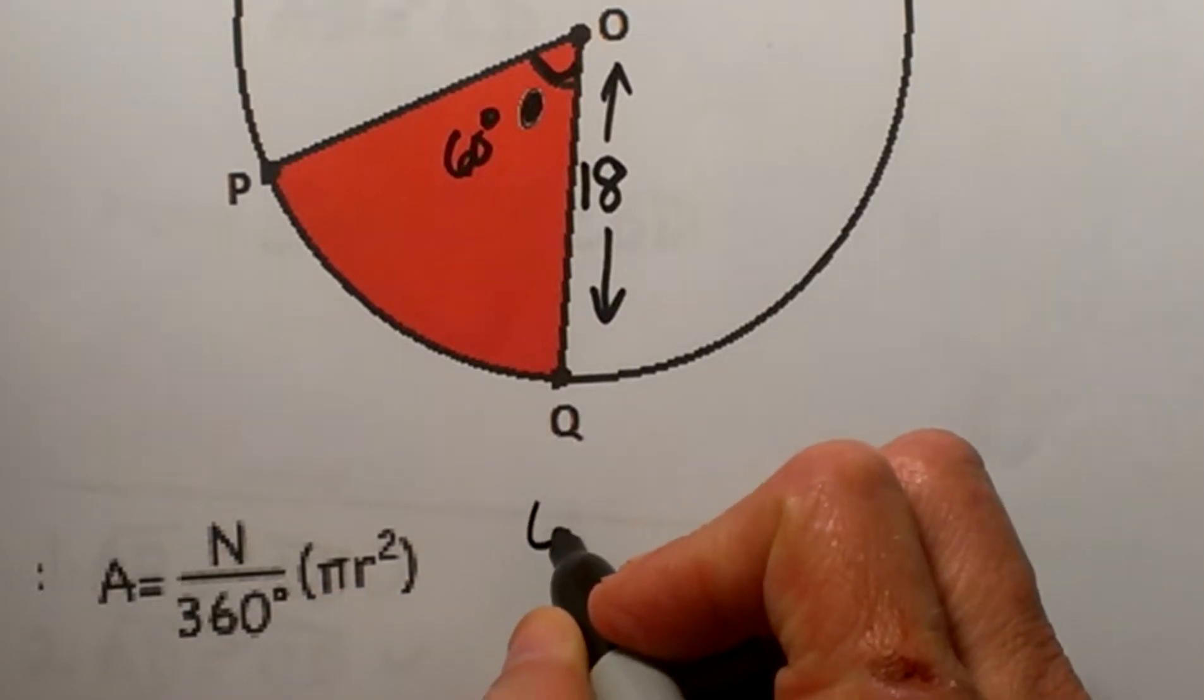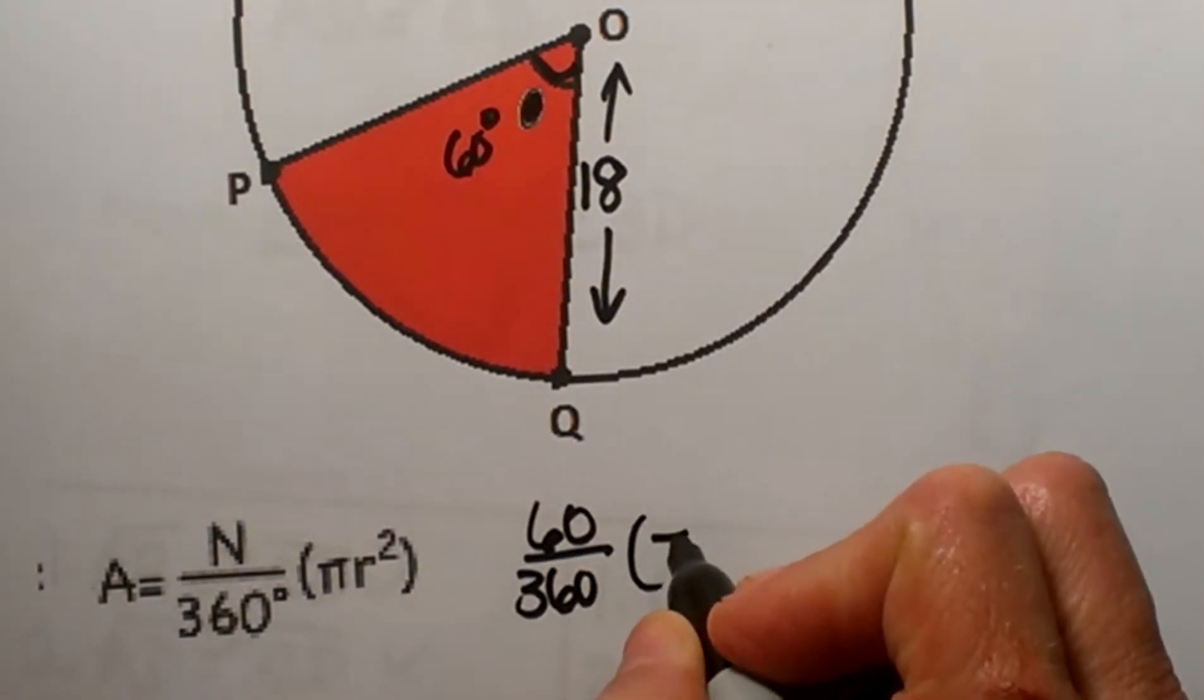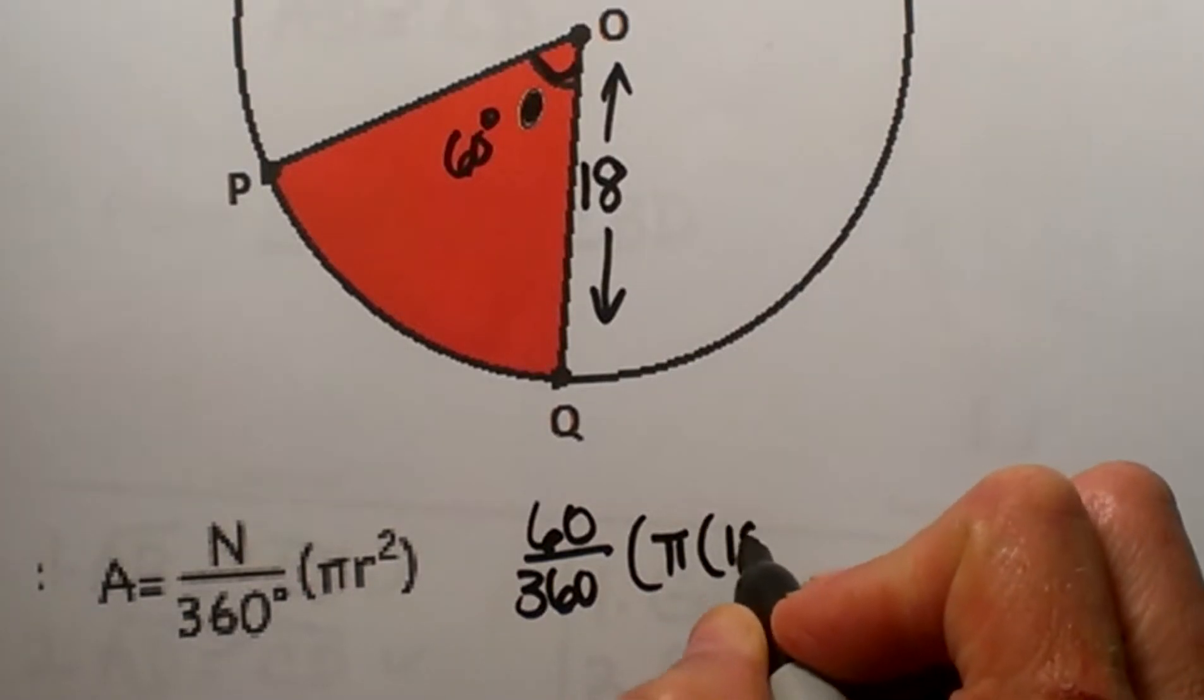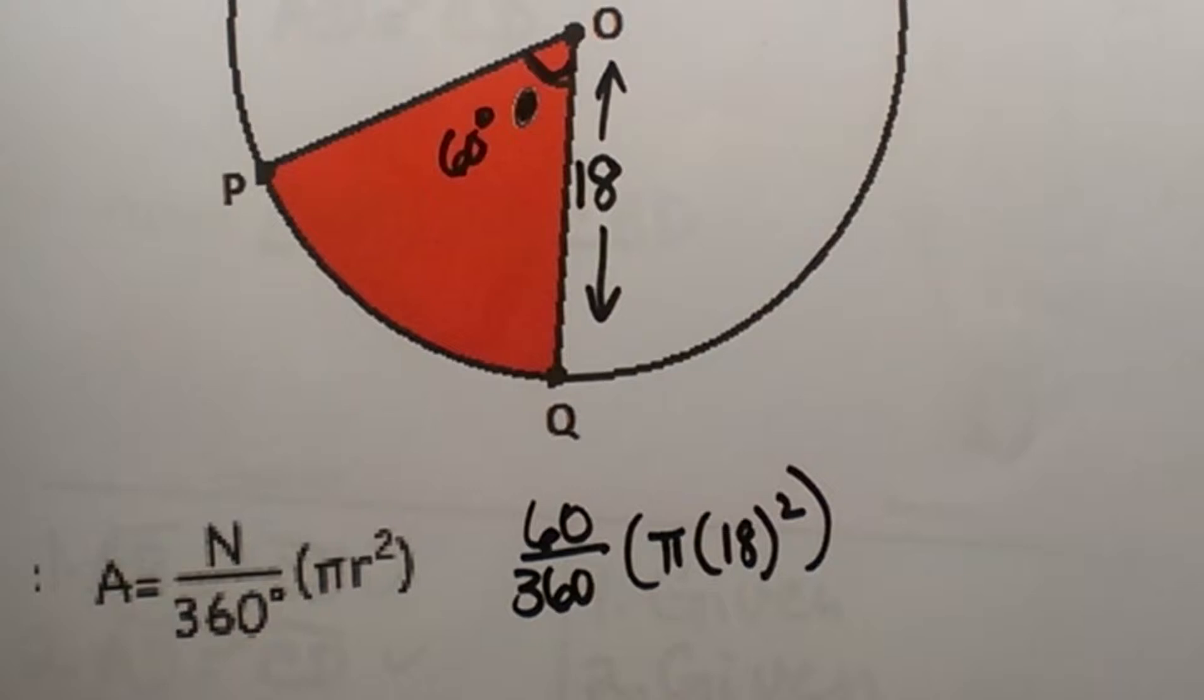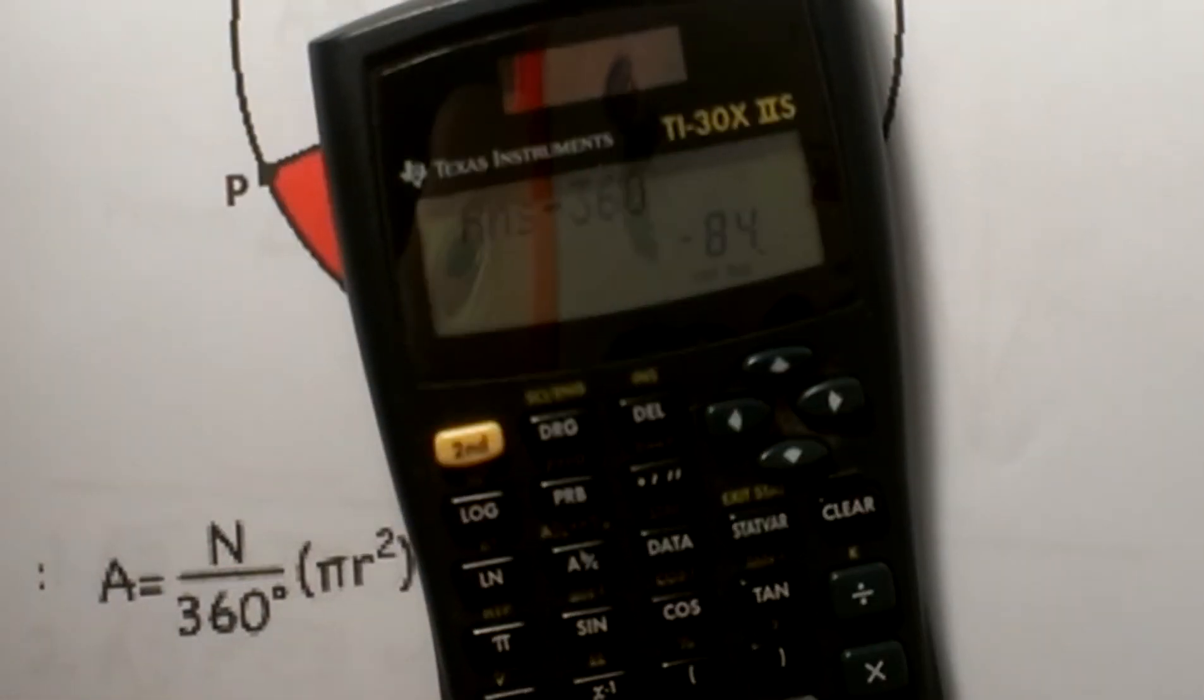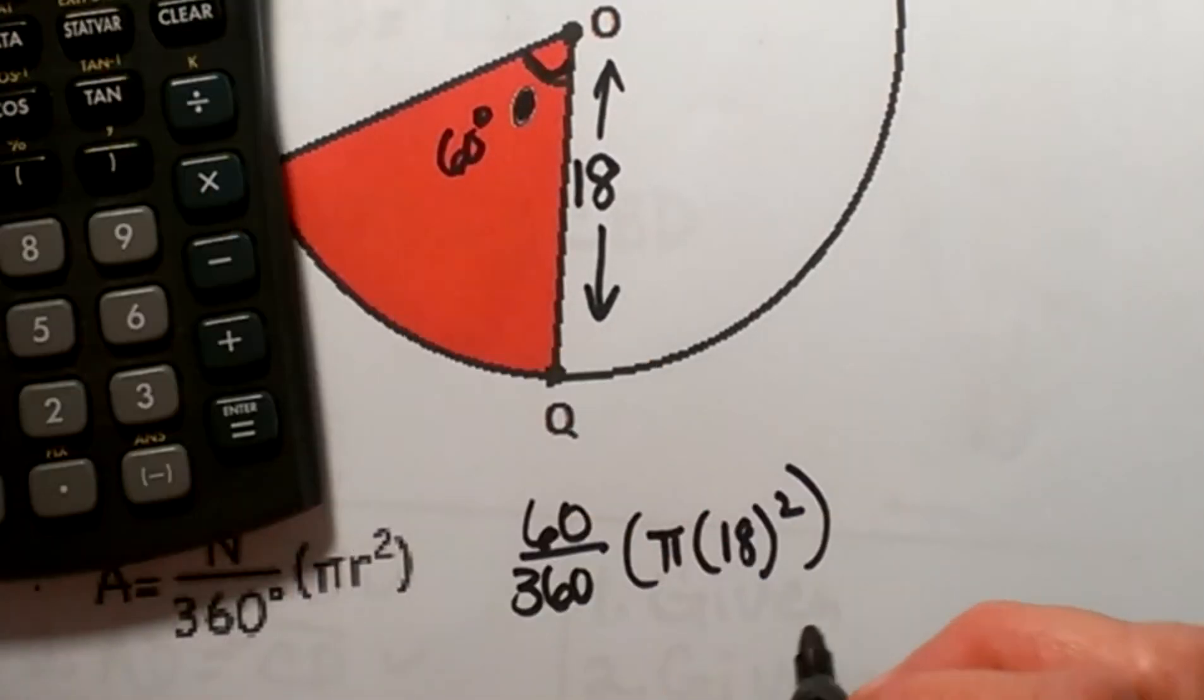So let's do some plugging and chugging. I am going to plug in 60 for n and I am going to plug in my radius is 18 squared. So let's first figure out the area of our circle. So we are going to take 18 and square it. So the area is 324 pi.